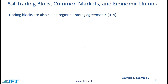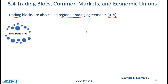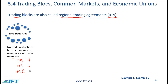Trading blocks — also called regional trading agreements or RTAs — come in different forms. The most basic is a free trade area or free trade agreement, where there are no trade restrictions between members but each country maintains its own policy with non-members. A classic example is NAFTA, the agreement between Canada, the United States, and Mexico, where goods and services flow freely but each country has its own policies with other countries like China.